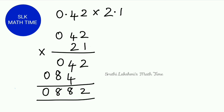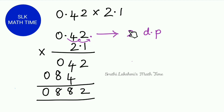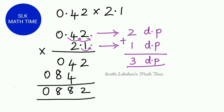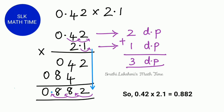But we need to find the answer of 0.42 times 2.1. So let's put the decimal points back where they used to be, then shift them to the end. In 0.42 I shifted two places, so I write two decimal places. In 2.1 I shifted one place, so I write one decimal place. Adding these together gives three decimal places. We place the decimal point three spaces from the right, counting 1, 2, 3. So 0.42 times 2.1 is 0.882.